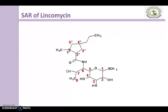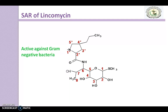The next modification is demethylation, which means removal of the methyl group. If you do the demethylation of this pyrrolidine ring — here is the pyrrolidine ring and here is the presence of the methyl group — removing that methyl group is the demethylation. This demethylation of the pyrrolidine ring changes the antibacterial property, making it active against gram-negative bacteria.